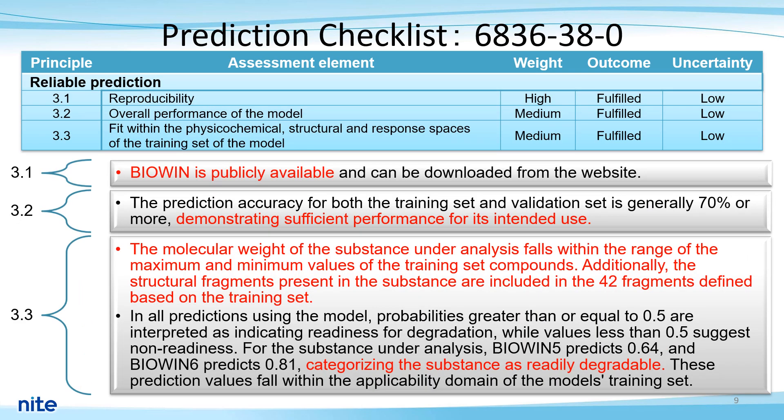Items 3.1 through 3.6 are used to evaluate the reliability of the forecast from multiple views. 3.1 is about the reproducibility of the model and 3.2 is about the performance of the model. As BioWin is publicly available and can be downloaded from the website, and the prediction accuracy of the training and validation sets are generally above 70%, we consider the prediction performance to be adequate for the intended use.